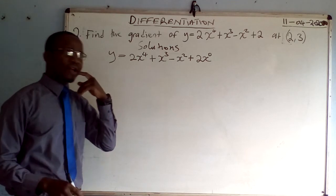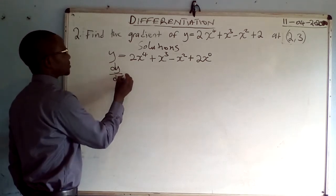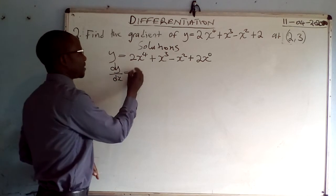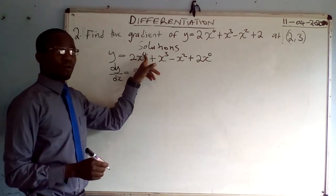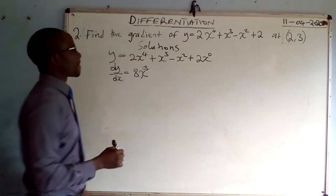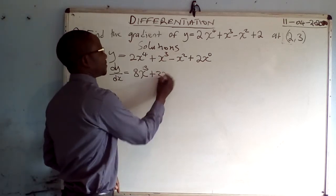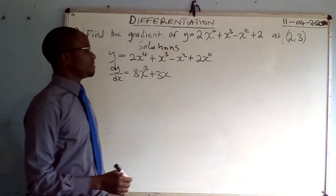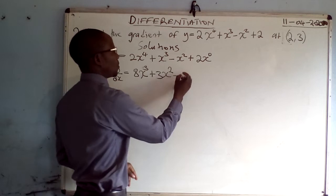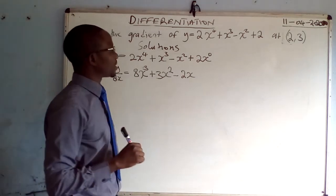We differentiate to find the gradient function, denoted mathematically as dy/dx. The power 4 is multiplied to the coefficient: 4 times 2 gives 8, and we subtract 1 from the power giving x to the power 3. The coefficient of x cubed is 1, so 1 times 3 is 3, and subtracting 1 from the power gives x squared. Minus: 1 times 2 is 2.